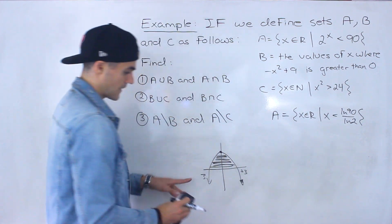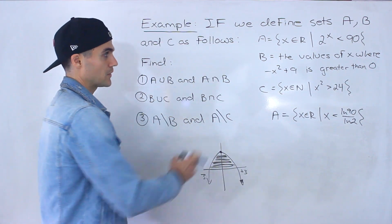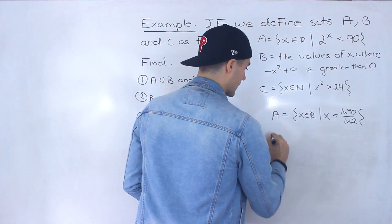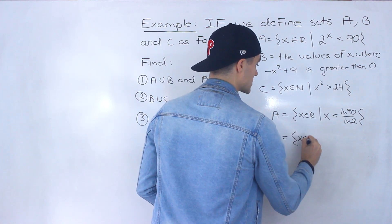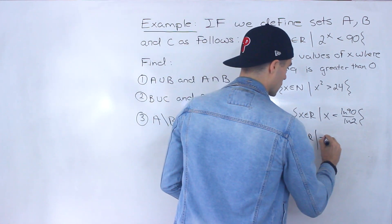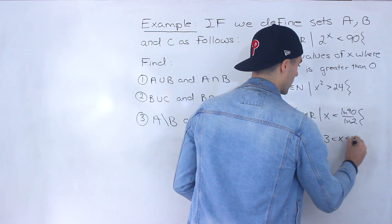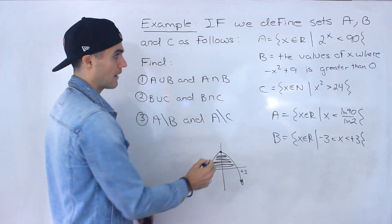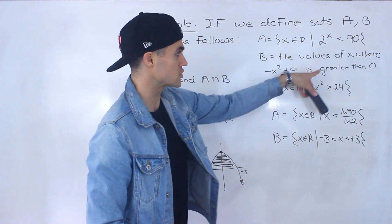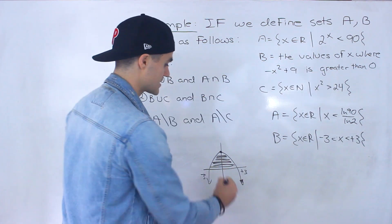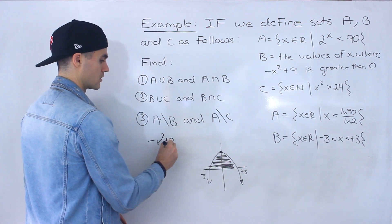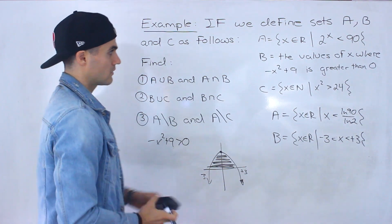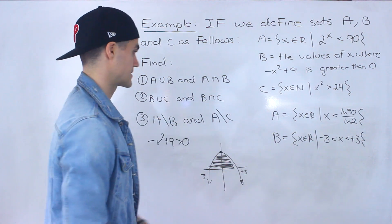So it's basically the x values between negative 3 and positive 3. We can rewrite the expression for set B as: x is an element of real numbers where x is between negative 3 and positive 3. Notice that it's not equal to negative 3 and positive 3 — that would be if the expression said greater than or equal to 0. It's just asking when is it strictly greater than 0, not greater than or equal to 0.